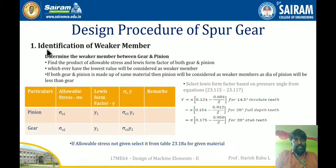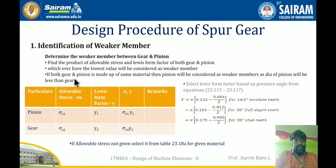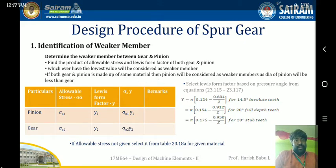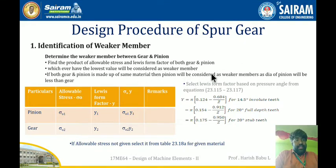The first step will be the identification of the weaker member. Since you have designed the spur gear, the design has to be based on the weaker member. You have to identify whether the pinion is weaker or the gear is weaker. To determine the weaker member, you have to find out the product of allowable stress and Lewis form factor of both the gear and pinion. Whichever has the lowest value is considered the weaker member. If both gear and pinion are made of the same material, then the pinion will be considered the weaker member, as the diameter of the pinion will be less than the gear.